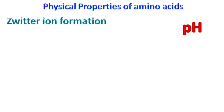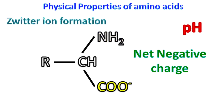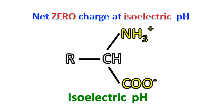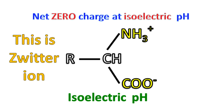Zwitterion formation: depending on the pH, the amino acid can either have a positive or a negative charge. Usually under acidic conditions, the amino acid will have a positive charge, while under alkaline conditions, the amino acid will have a negative charge. However, at isoelectric pH, the amino acid will have both a positive and a negative charge, and hence the net charge on the amino acid will be zero. This pH is called the isoelectric pH and the amino acid is called a zwitterion.